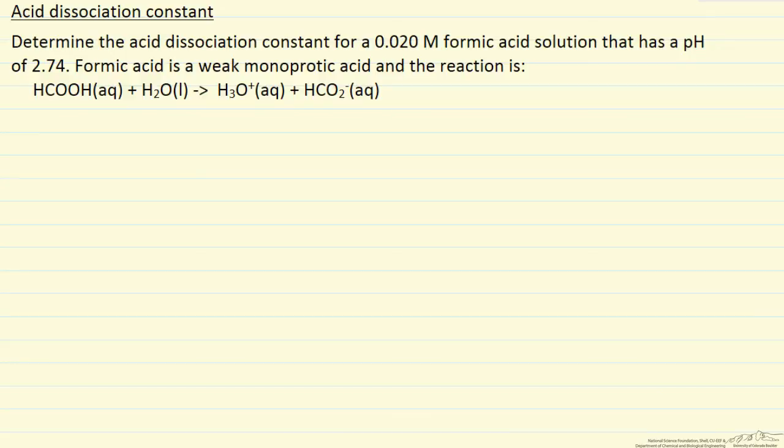Here we have acid dissociation, and we want to know the acid dissociation constant. We have a 0.020 molar formic acid solution, where this is formic acid, and the pH is 2.74.